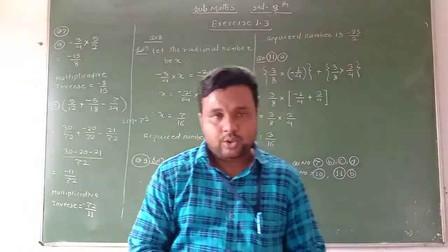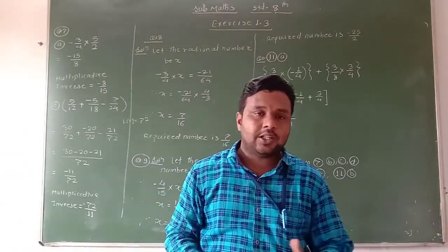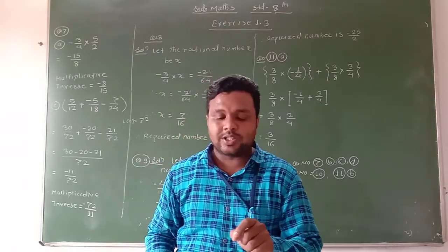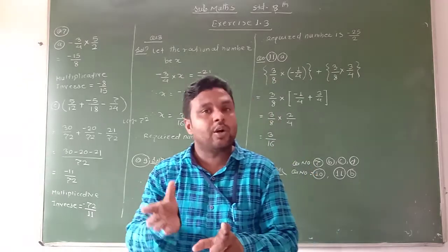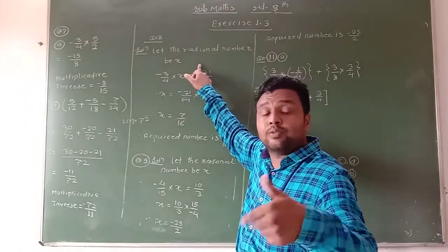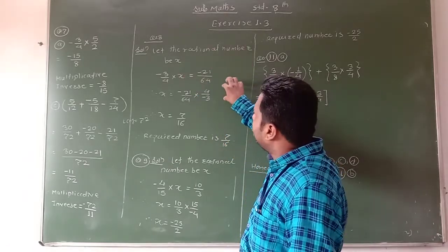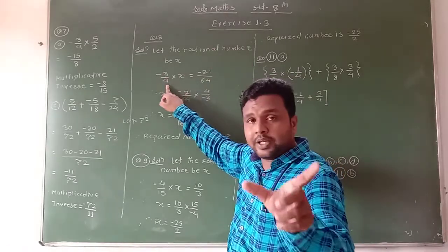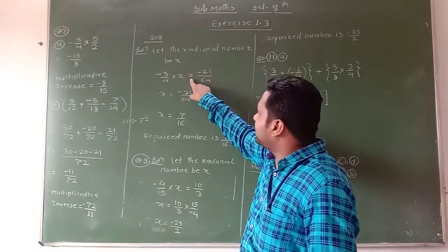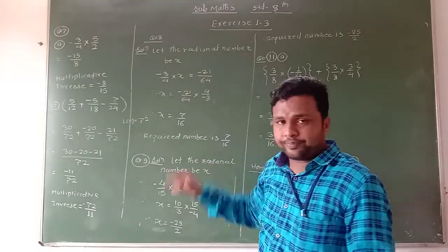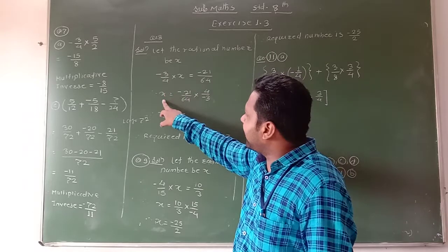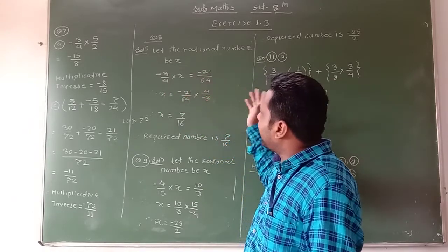Now see the next question — a word problem. By what rational number should minus 3 upon 4 be multiplied to get minus 21 upon 64? We have to find one rational number by which to multiply. Therefore, let the rational number be x. According to this condition, minus 3 upon 4 multiplied by x is equal to minus 21 upon 64. According to the condition, we put the equation. Now we solve the equation: x is on the left-hand side, and minus 21 upon 64 is on the right-hand side.